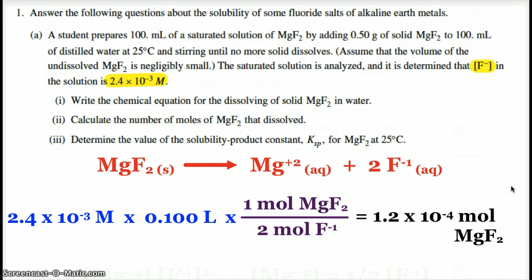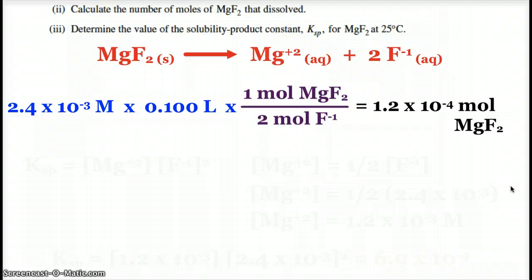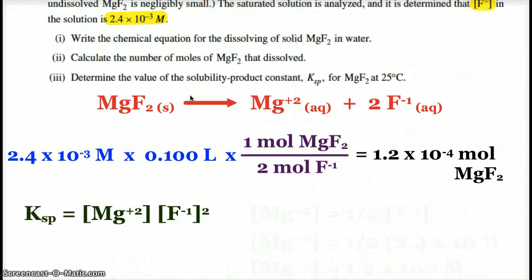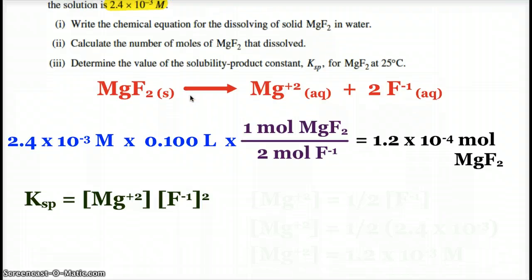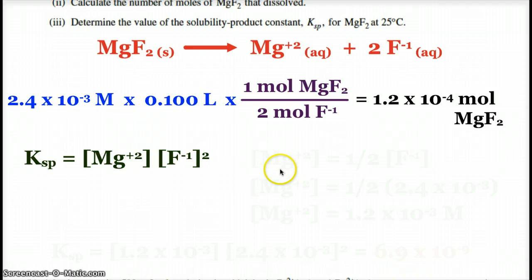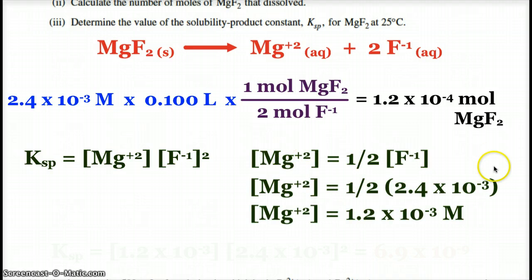Now we want to determine Ksp. Okay, so first we need our Ksp expression. So Ksp is going to be the concentration of magnesium times the concentration of fluoride squared. We know the concentration of fluoride, 2.4 times 10 to the negative third molar. We don't know the concentration of magnesium directly. But we do know that the concentration of magnesium is half the concentration of fluoride. So half of the 2.4 times 10 to the negative third is my concentration of magnesium ion. Because I get two fluoride ions for every mole or formula unit of magnesium fluoride, I only get one magnesium ion.